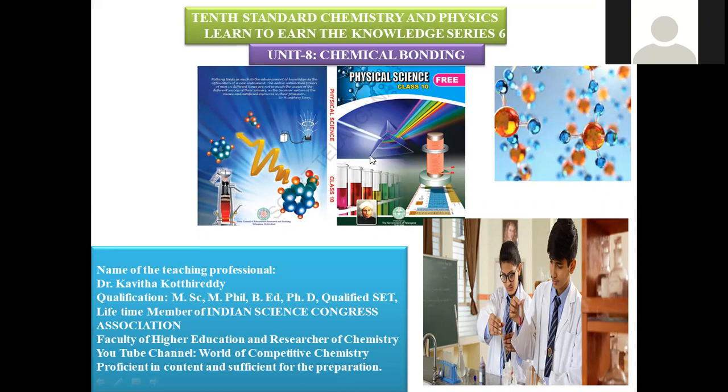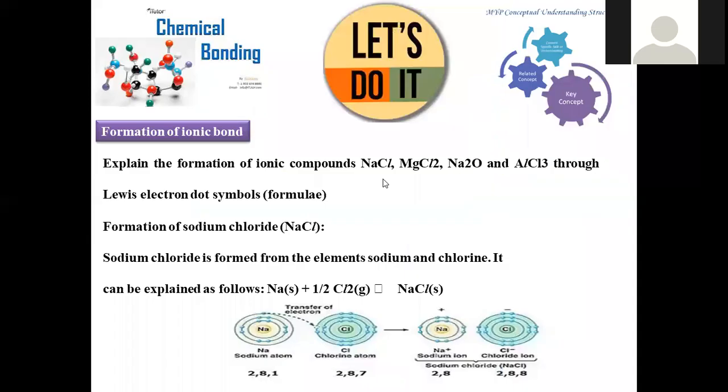We will observe the demonstration of ionic bond formation in various molecules. We explain the formation of ionic bonds by taking four examples: sodium chloride, magnesium chloride, sodium oxide, and aluminium chloride through the Lewis electron dot symbol.